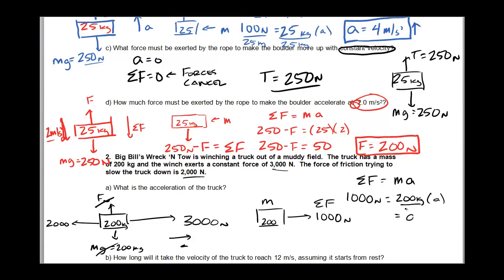So we divide both sides by 200, and we get the acceleration to come out to be 5 meters per second squared. And I'll let you guys work on the rest in class.